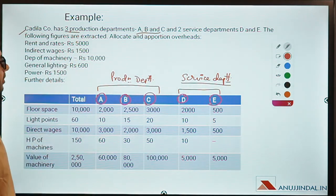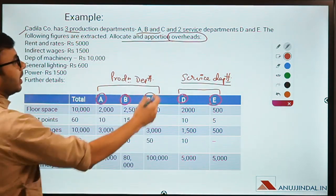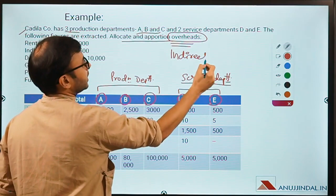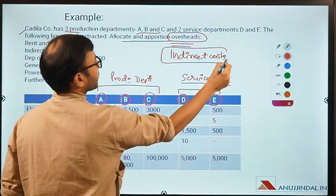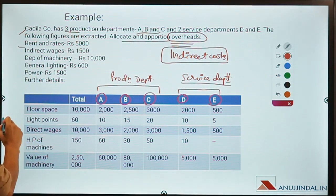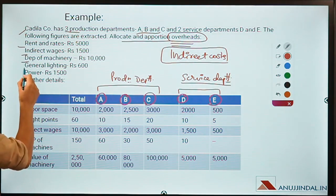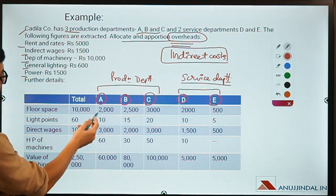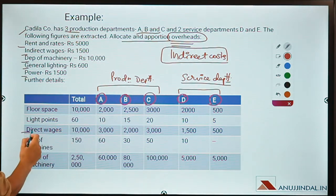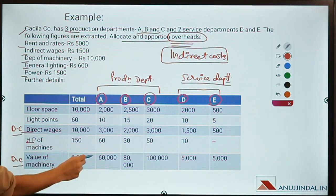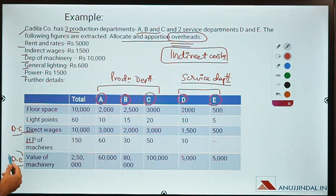We have to allocate only overheads — that means all the indirect costs. All direct costs will be ignored. The costs we have are: rent and rates, indirect wages, depreciation of machinery, general lighting, and power — all indirect costs. There are also direct wages and value of machinery listed, but direct wages is a direct cost, not an indirect cost. Horse power of machinery and value of machinery are also direct costs.